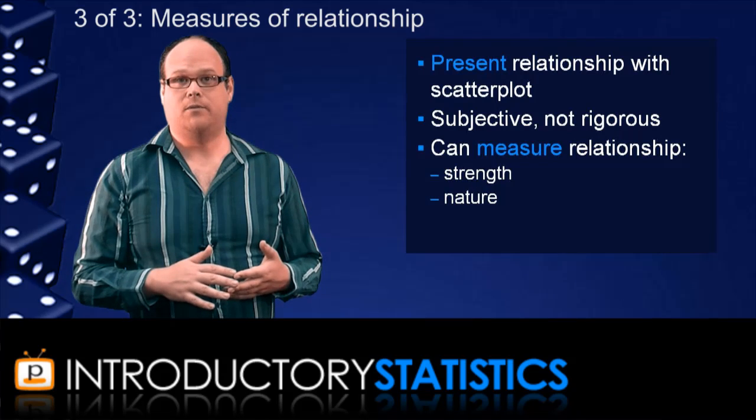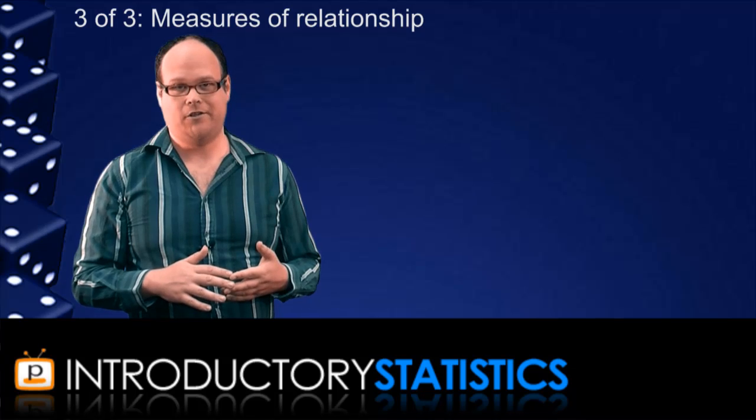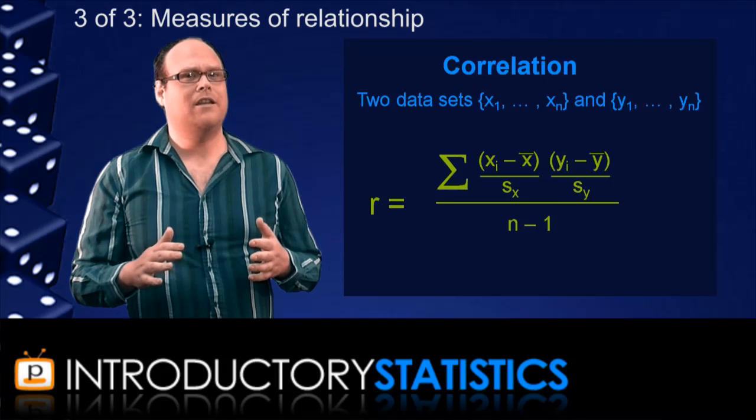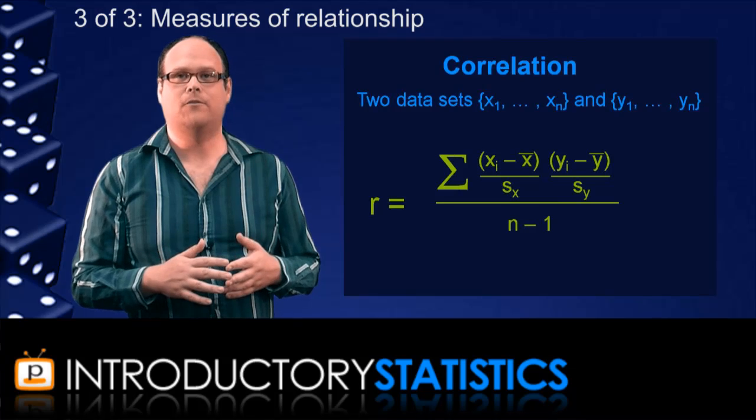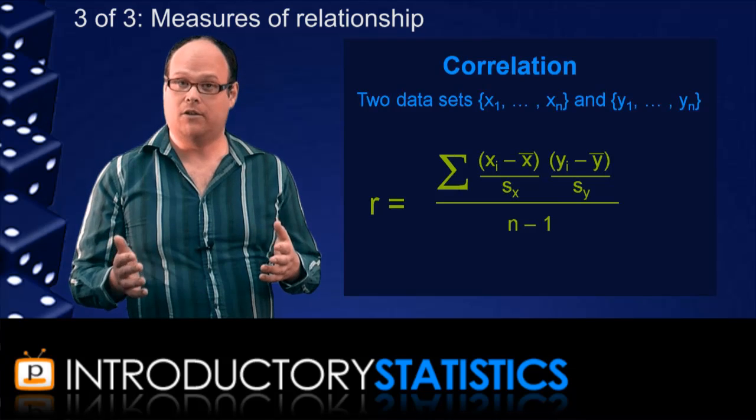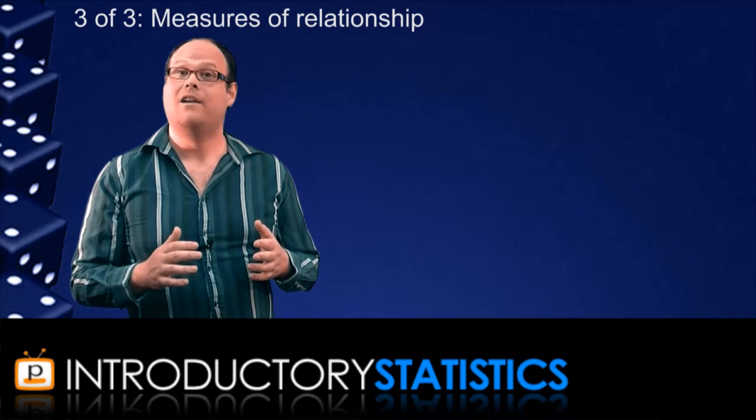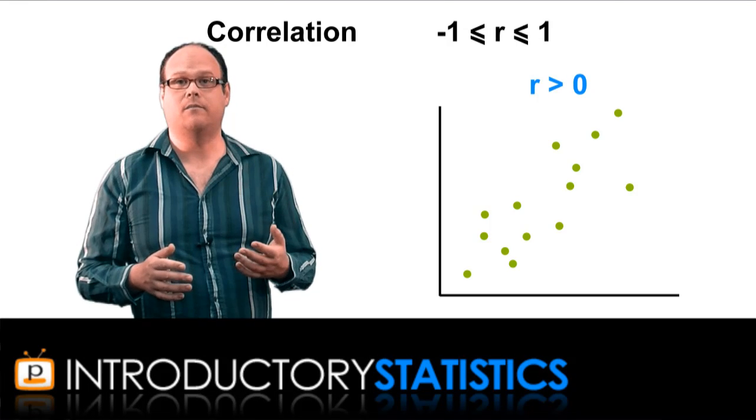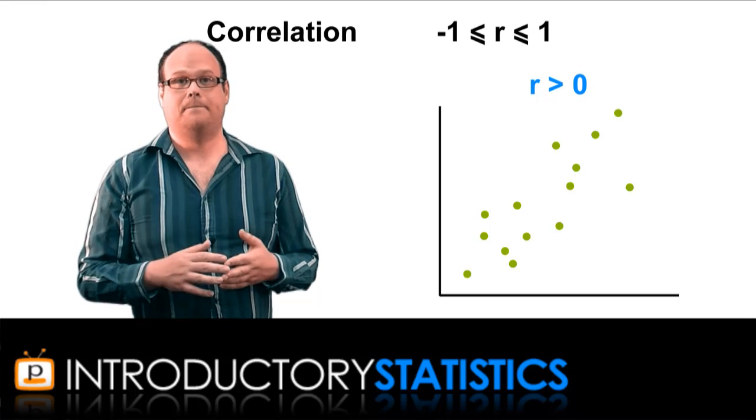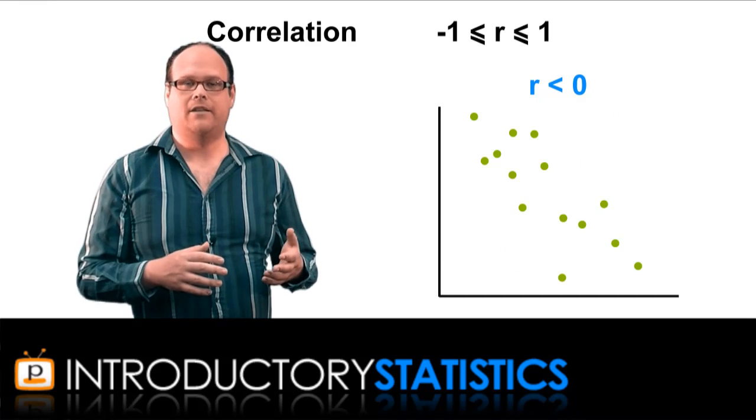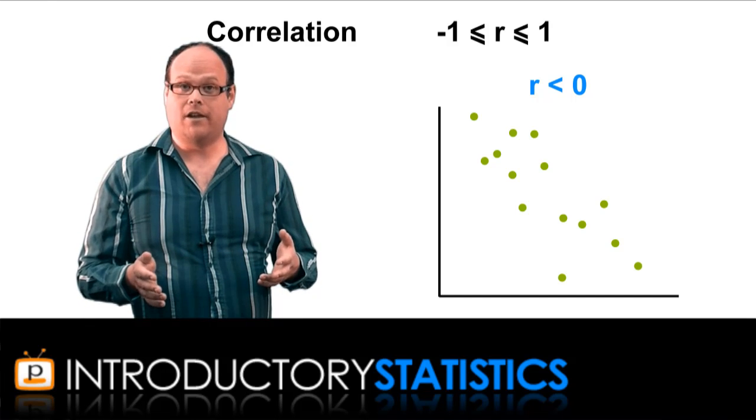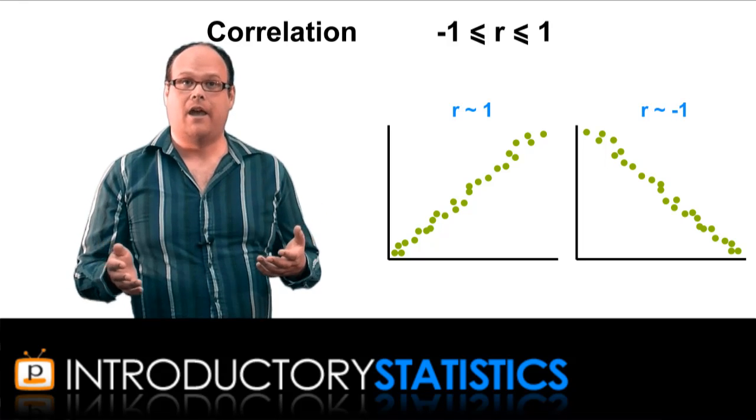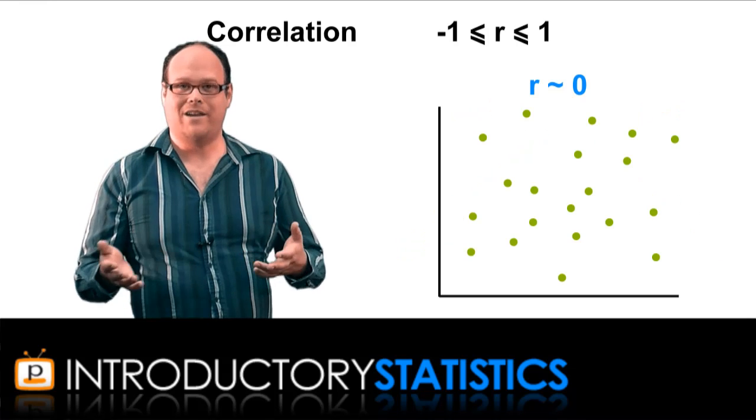The strength of linear relationship between two variables is measured by a thing called correlation. Here is the formula for the correlation between two sets of data. It looks fairly complicated, and it is, but the important thing is not to be able to calculate a correlation. We usually get software to do that for us. The important thing is to be able to interpret what the correlation means. The important things to note for correlation are: the correlation will always be somewhere between minus one and one. If it's positive, that means that there is a positive association between the two variables. The scatter plot slopes up to the right. A negative correlation means a negative association. The scatter plot slopes down to the right. And the closer the correlation is to either of the two extremes, that is, the closer it is to minus one or one, the stronger the linear relationship is, and a correlation close to zero suggests a weak linear relationship.